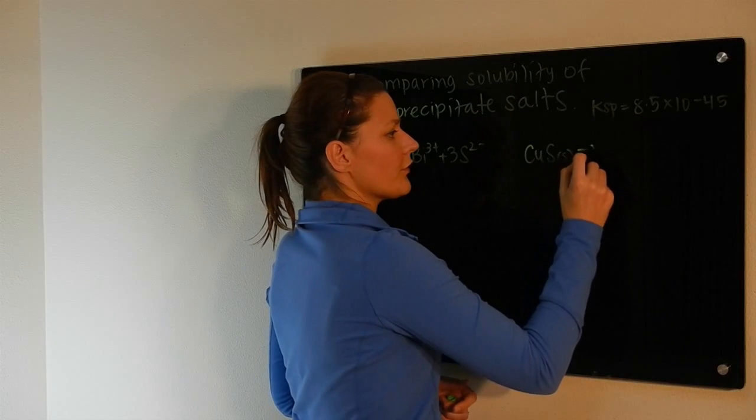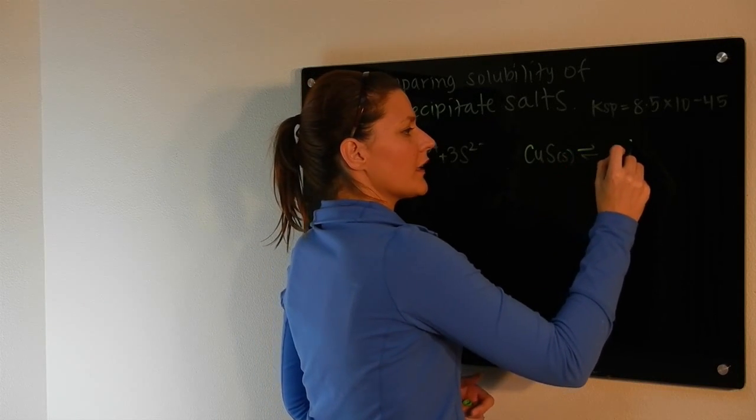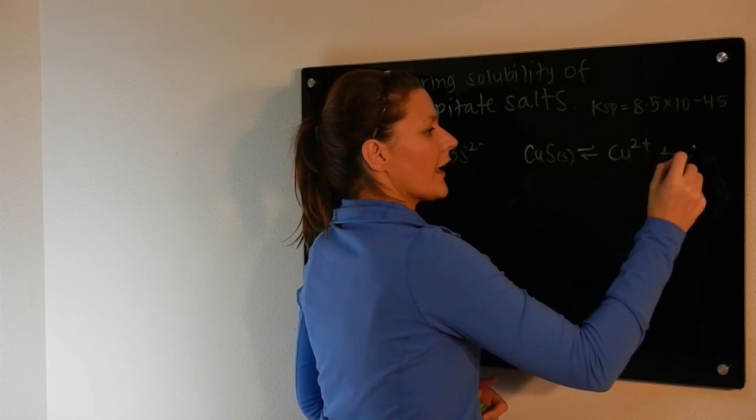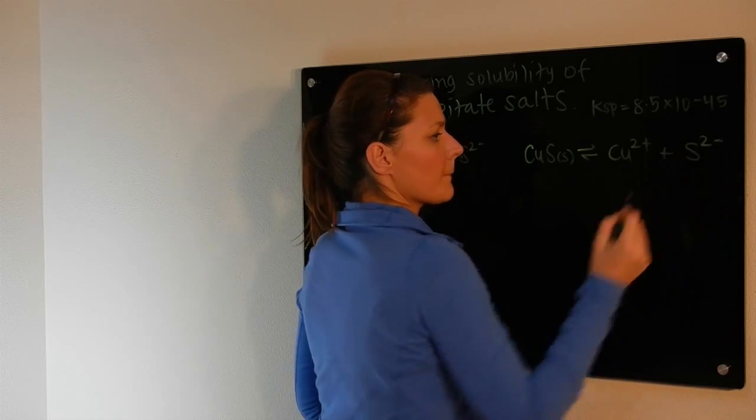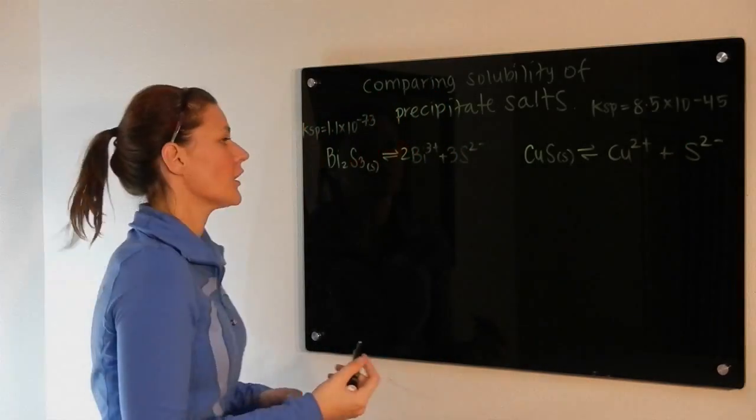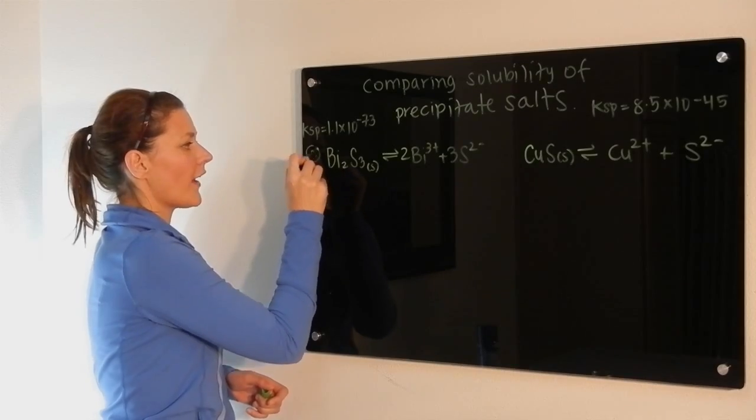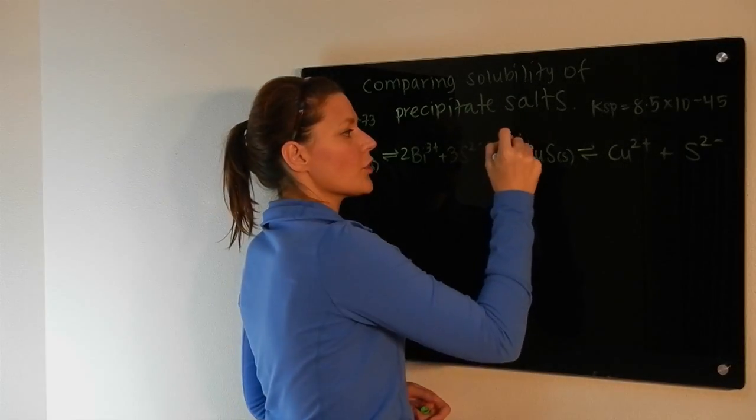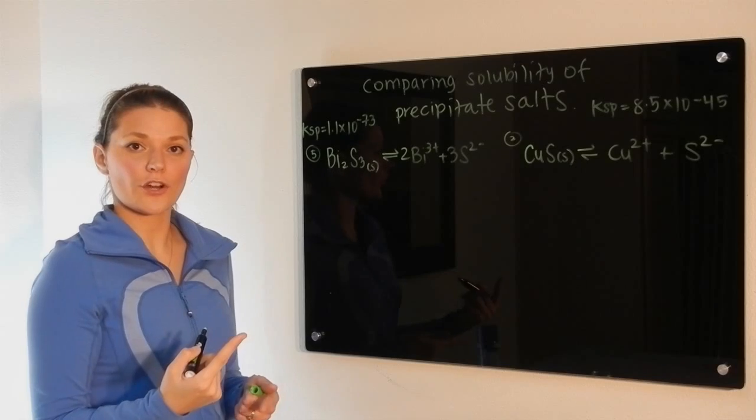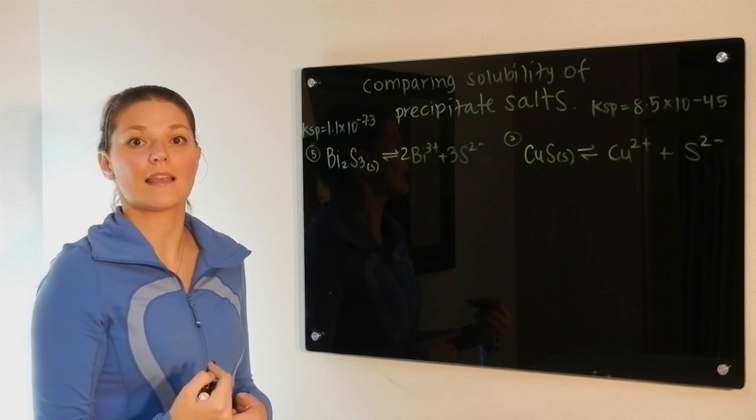If we look at the copper two sulfide now, that breaks up simply into copper two plus and sulfide. That is only two ions. So because this has a total of five ions and this has a total of two, we need to do an ICE chart calculation to actually determine what the solubility is.